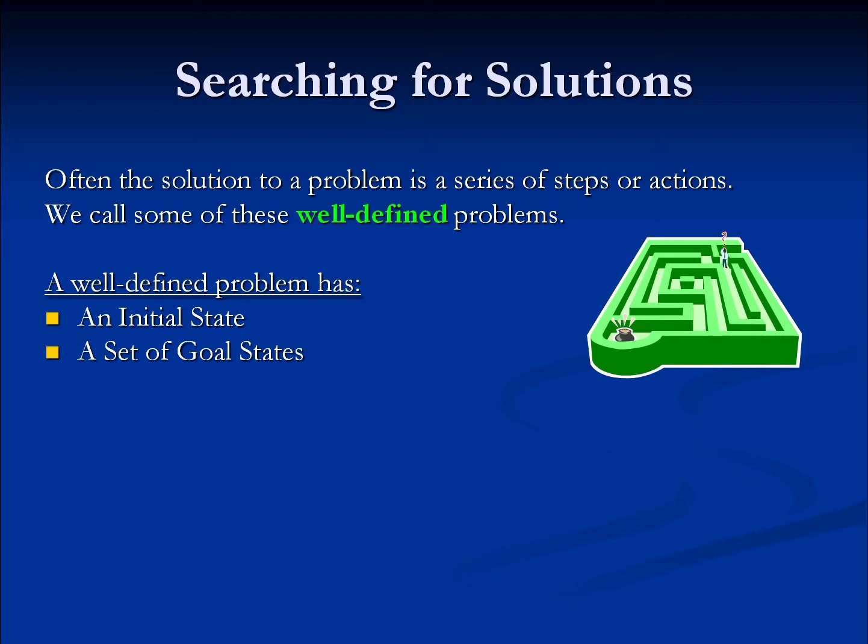In a path planner, the goal state would be the destination — the location we're trying to get to. A well-defined problem also has what we call a state space, and this is the set of all reachable states from the starting point, from that initial state.